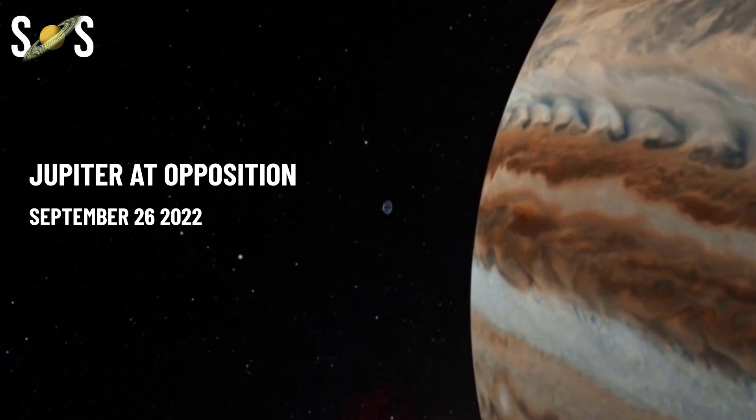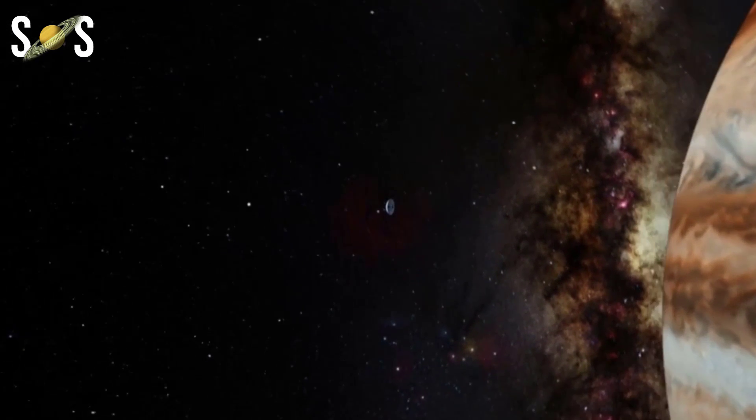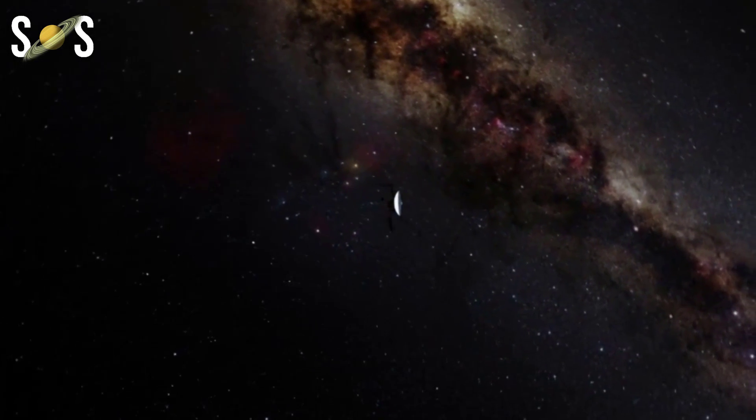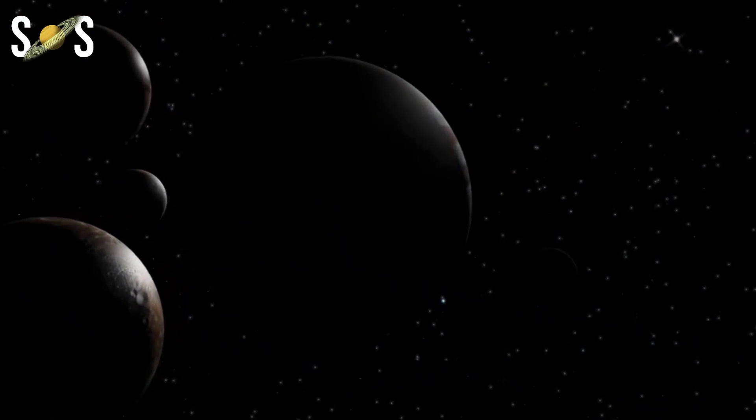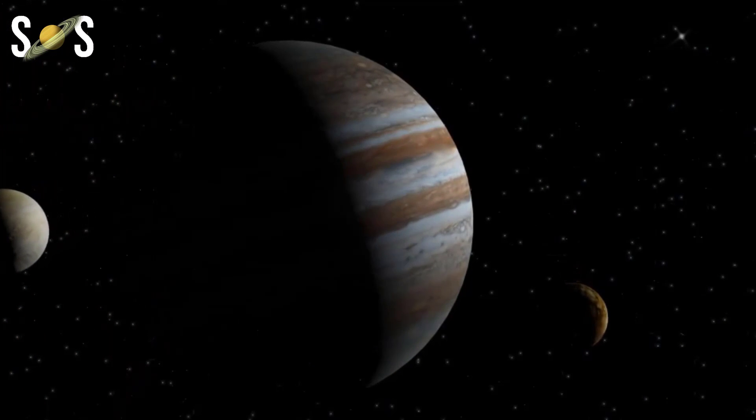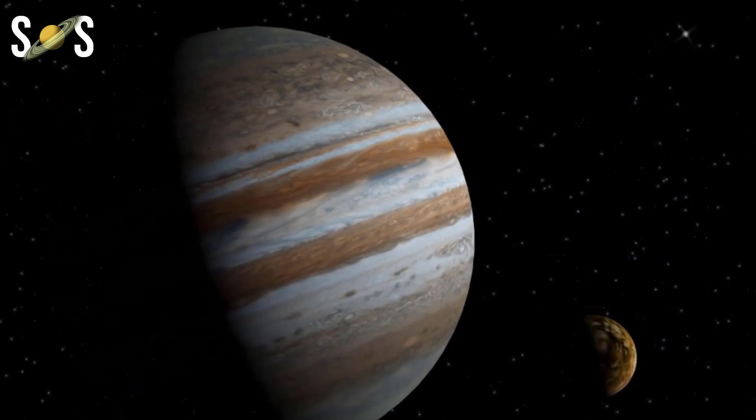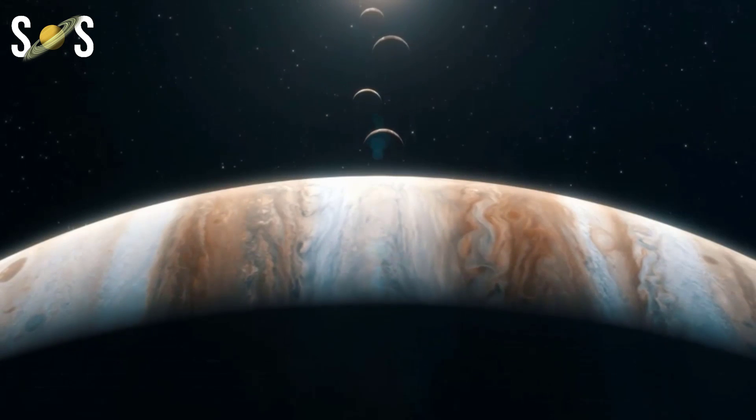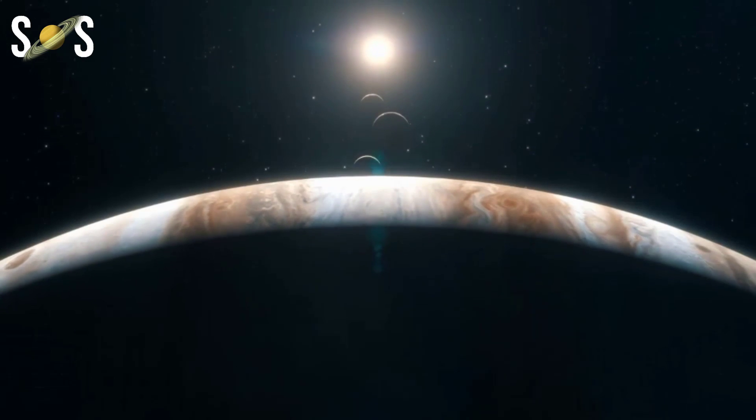September 26th, Jupiter at opposition. I mentioned a second opportunity to spot Jupiter in the September night sky, and here it is to wrap up the month. In the evening of September 26th, Jupiter will reach opposition and be brightly lit by the sun, opposite in the sky. While Jupiter is always bright and easy to spot, this is a particularly great night. Grab your telescope or binoculars for an even better view of the stormy bands and many moons of our solar system's great gas giant.